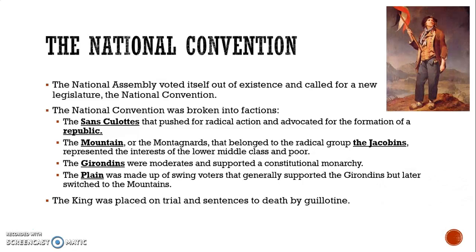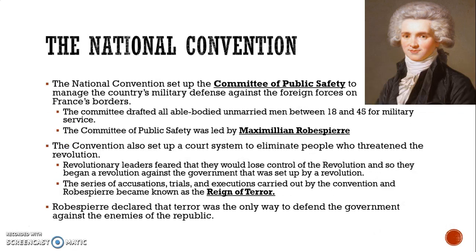The National Convention was broken into different factions. The sans-culottes pushed for radical action and advocated for a republic where the people voted for representatives. The Montagnards, or the Mountain, belonged to the radical Jacobins and represented the interests of the lower middle class and the poor. The Girondins were moderates who supported a constitutional monarchy. The Plain was made up of mainly swing voters who generally supported the Girondins but would later switch to the Mountain. The king was placed on trial by the National Convention and sentenced to death by the guillotine. The Committee of Public Safety was also set up to manage military defense, drafting all able-bodied unmarried men aged 18 to 45.